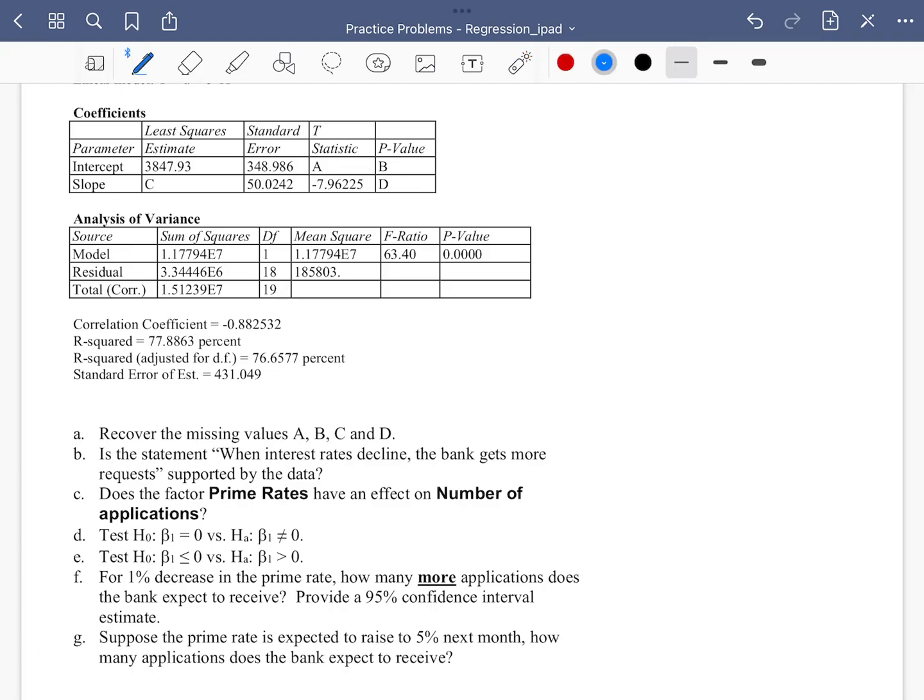We talked about there's a relationship between the estimate, the standard error, and also the t-statistic. Most specifically, the relationship is the t-stat is the estimate divided by the standard error. So we can use this relationship to recover missing values here. For A, A should be equal to 3847 divided by 348.986. I was able to calculate this to be 11.026.